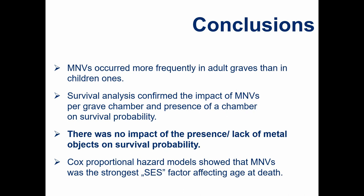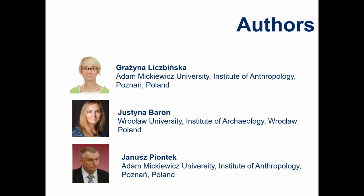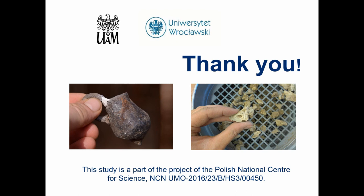To sum up: minimal numbers of vessels occurred more frequently in adult graves than in children's. Survival analysis — the Kaplan-Meier curve — confirmed the impact of minimal numbers of vessels and the presence of the chamber on survival probability. There was a lack of such impact in the case of metal objects. Finally, Cox's proportional hazard models showed that minimal numbers of vessels had the strongest impact and was the strongest socioeconomic factor affecting age at death of individuals. Thank you very much for your attention.